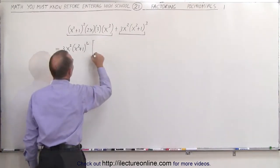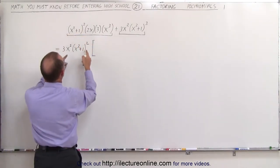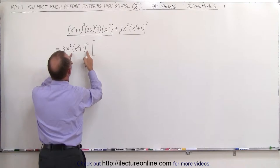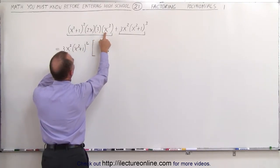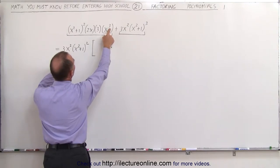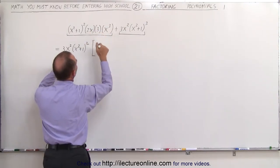Now what's left? Over here we realize that this is now gone because we factored it out. The 3 is gone because we factored it out and the x squared is gone, so we're left with an x here and a 2x there, so 2x times x gives us 2x squared.